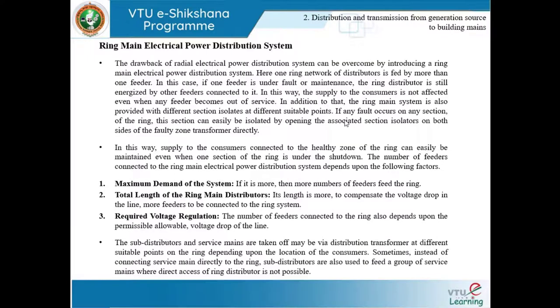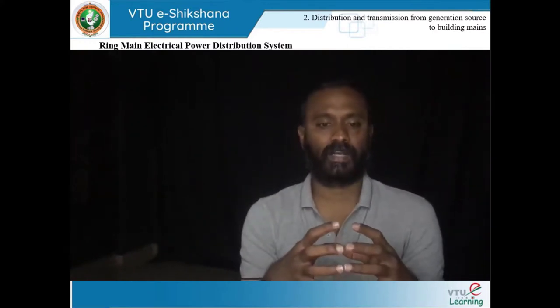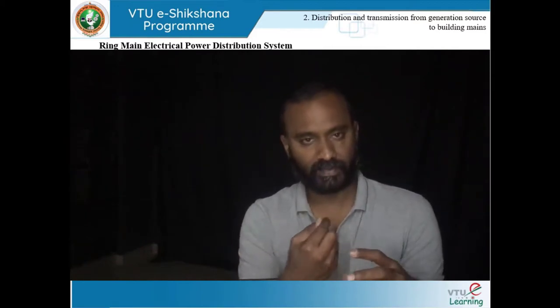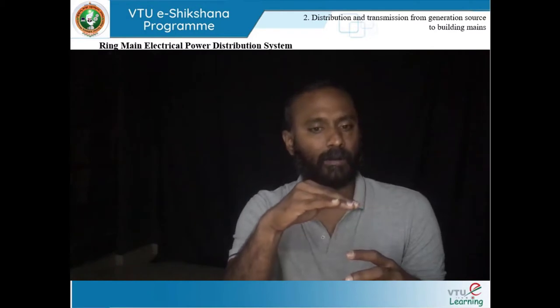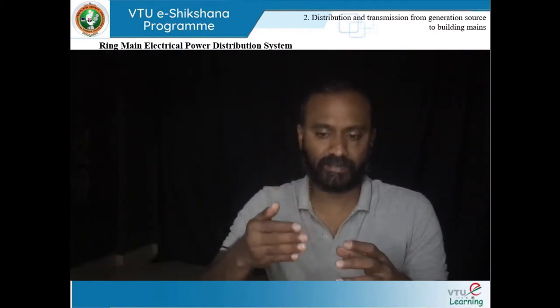The ring main electrical power distribution system is even better. It is similar to the radial system except that a ring is introduced. One ring network of distributors is fed by more than one feeder — if one feeder is under fault or maintenance, the ring distributor is still energized by the other feeders connected. So even if one feeder fails, several other feeders power up the ring and keep the entire system energized.